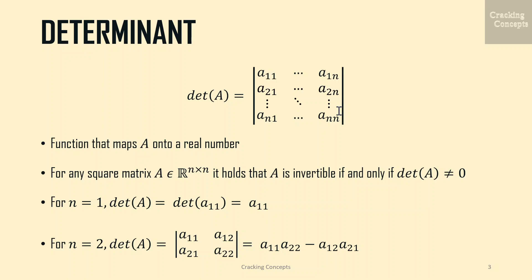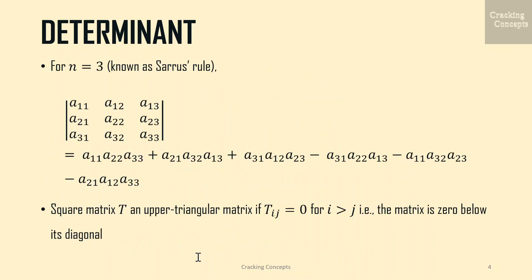For any square matrix A, it also holds that A is invertible if and only if the determinant of A is not zero. For n equal to 2, the determinant is A₁₁·A₂₂ minus A₁₂·A₂₁. For n equal to 3, we use the Sarrus rule, and we get the following expansion. More details on this will be seen in the following slides using examples.